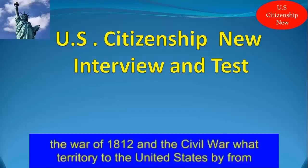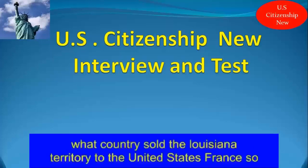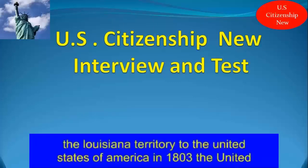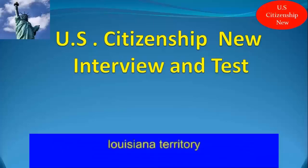Name one war fought by the United States in the 1800s. The War of 1812 and the Civil War. What territory did the United States buy from France in 1803? The Louisiana Territory. What country sold the Louisiana Territory to the United States? France. In 1803, the United States bought a large amount of land from France. Where was that land? The Louisiana Territory.